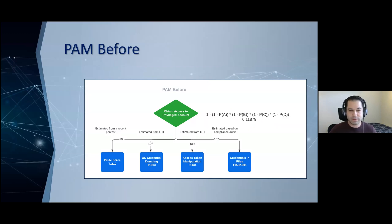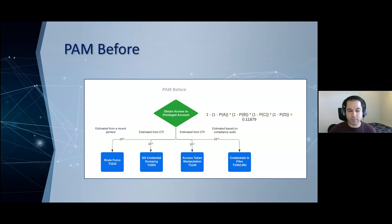Because we've done this, we're able to get measurements from these and determine an overall probability that somebody would obtain access to a privileged account. Some can be done from measurements, such as from a pen test or compliance audits, and some from estimates and research, such as for credential dumping, where our cyber threat intelligence folks pull reports and collect data. From this, we get an overall probability of about 12%. Again, this isn't 100% accurate, but it's more accurate than before when we were just saying this is a low or medium risk. We now have actual quantitative numbers.